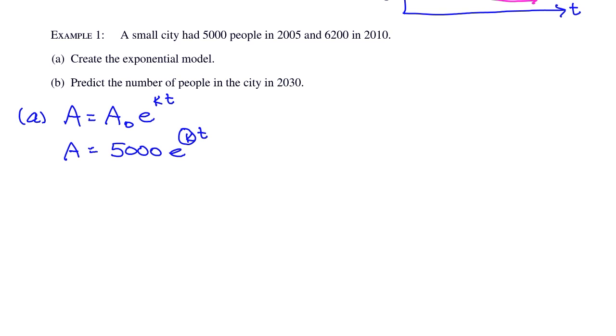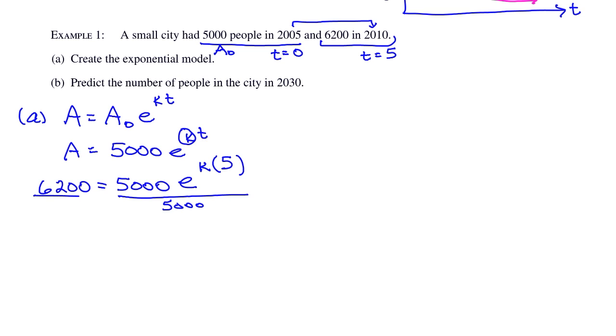We now need to find the value of k. To find k, I'm going to throw in the other point, which is 6,200 and 2010. So plugging that in for A, we get 6,200 equals 5,000 e to the k. And then we need the appropriate value of t. We're not going to use 2010 for t. We're going to make t a variable that's relative to this situation. Since the initial amount was 5,000 and it occurred in the year 2005, we're going to make that time 0. So 2005 represents time equals 0. Then how far in time is 2010 away from 2005? That's 5 years away. So this means for 2010, t is equal to 5. So we're going to put 5 in for t. Next, divide both sides by 5,000.